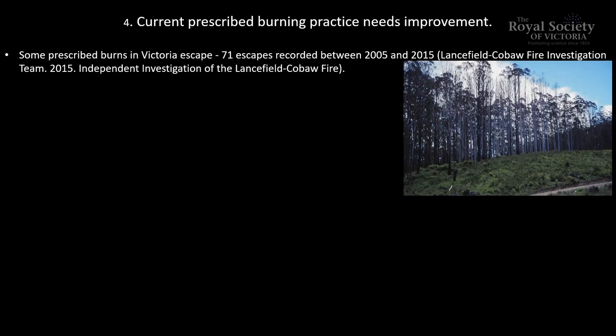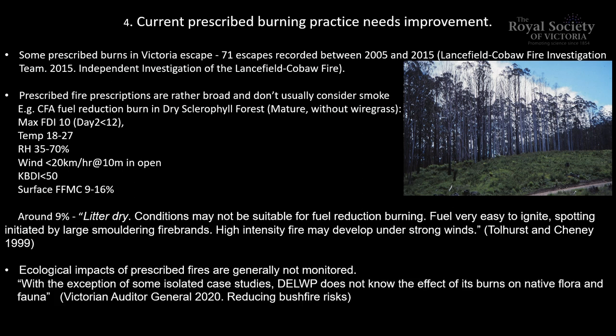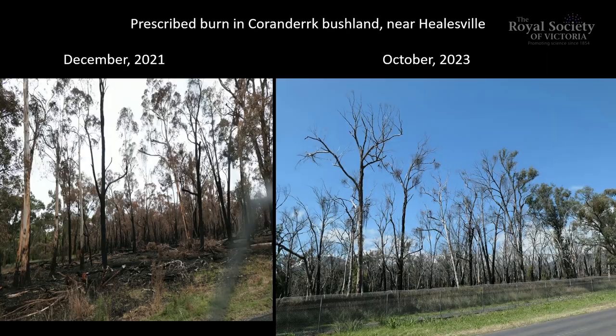We need to improve burning practices. Fires often escape. Prescriptions allow fires to escape because they're very broad. They don't consider smoke. They don't consider ecological impacts of what they're doing. Looking at Coranderk bushland near Healesville, a prescribed burn in December 2021 caused the fire to scorch all the leaves on the trees. Two years later, the trees are dead totally.